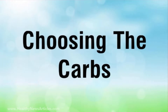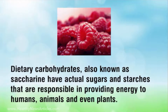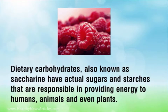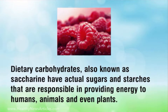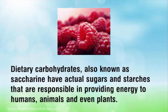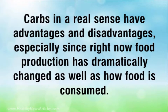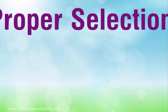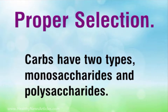Dietary carbohydrates, also known as saccharides, include actual sugars and starches responsible for providing energy to humans, animals, and even plants. Carbs have both advantages and disadvantages, especially since food production and consumption have dramatically changed. Proper selection of carbs is essential — they come in two types: monosaccharides and polysaccharides.